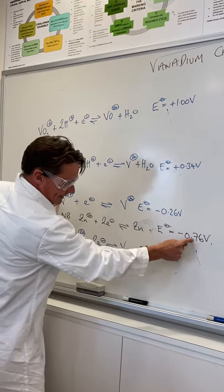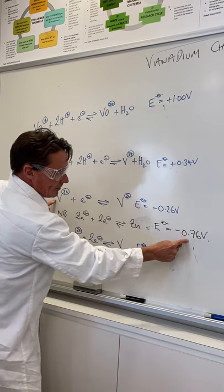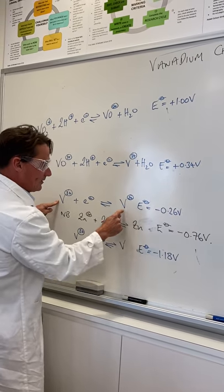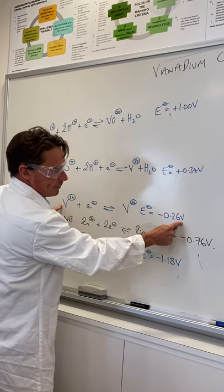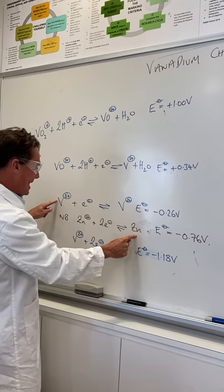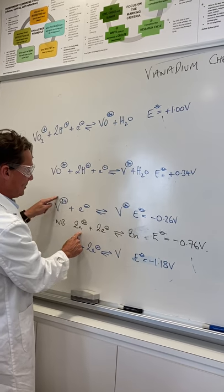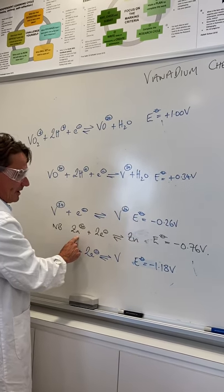And this is still considerably more negative at -0.76 volts compared to the vanadium 3+/vanadium 2+ half-cell, which is -0.26 volts. So again, zinc is going to go to zinc 2+, and the vanadium is going to go down to vanadium 2+.